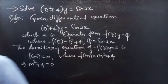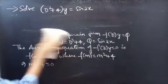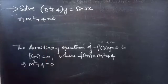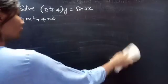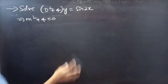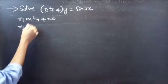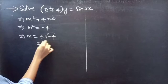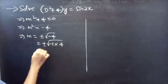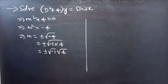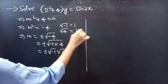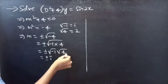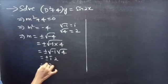We can find the roots in two ways. We have m² + 4 = 0, so m² = −4, which gives m = ±√(−4). We can write √(−4) as √(−1 × 4) = √(−1) × √4. Since √(−1) = i and √4 = 2, we get m = ±2i.